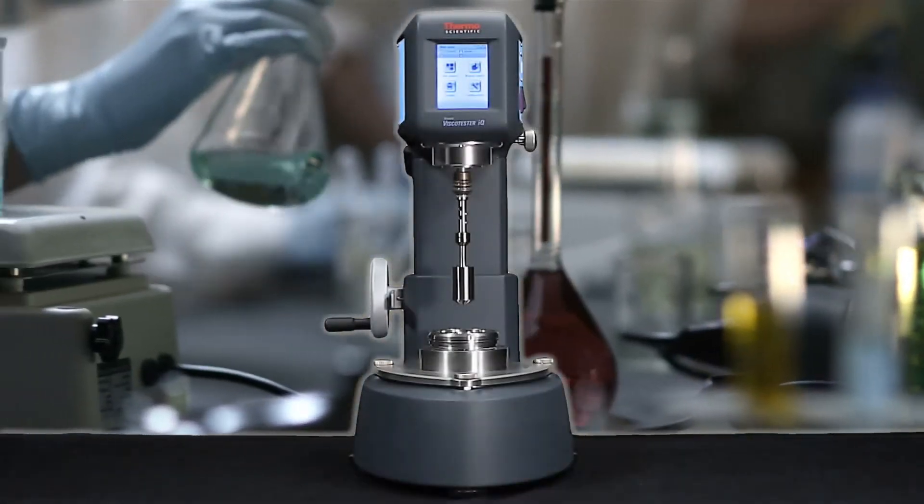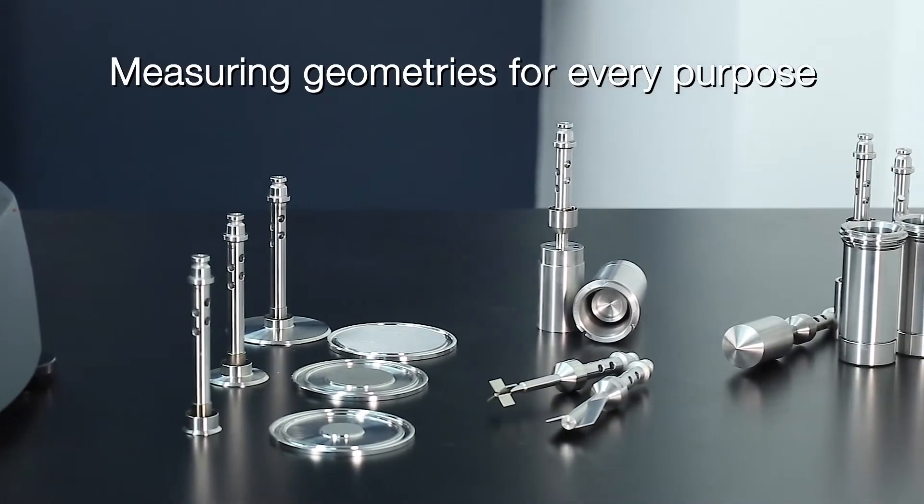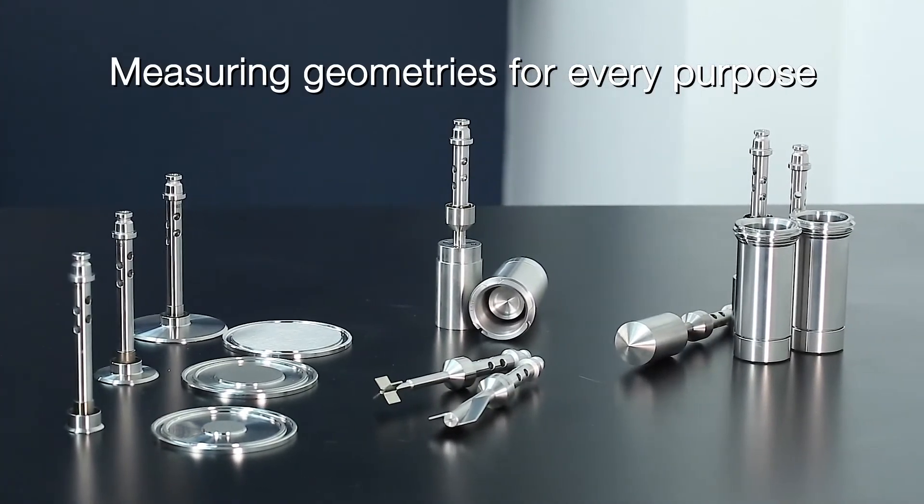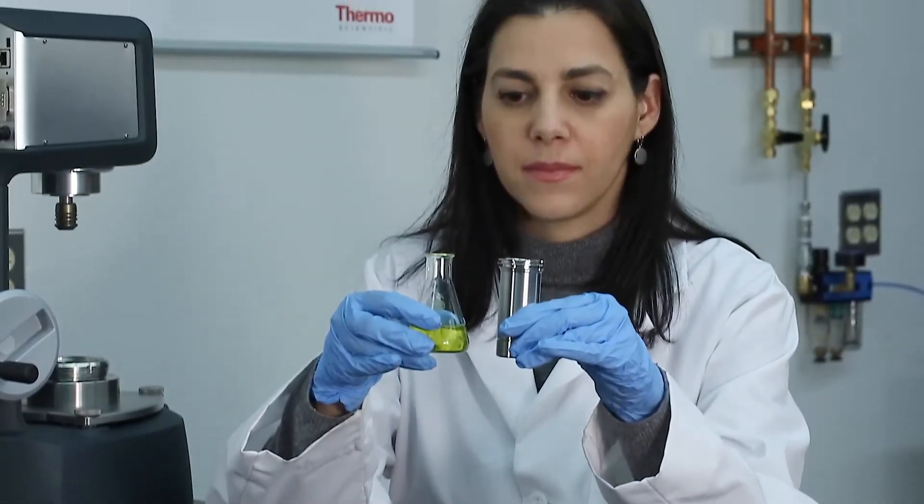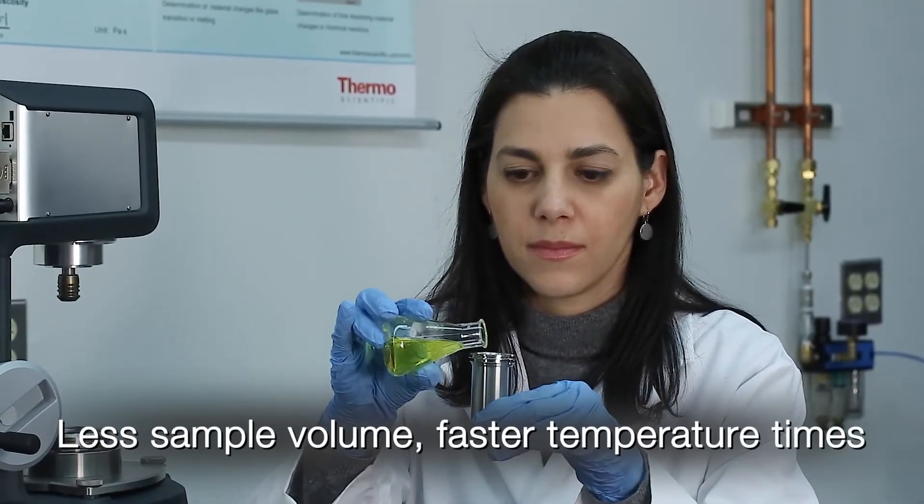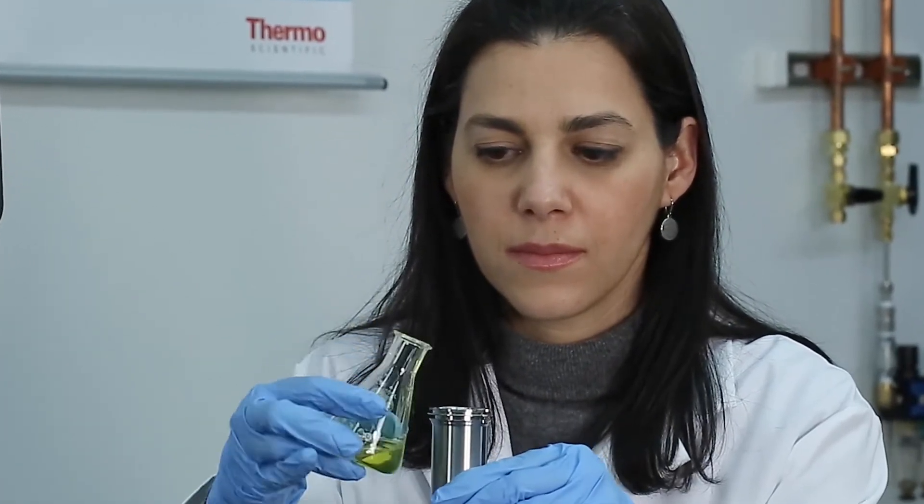The Haake ViscotesterIQ rheometer comes with a full range of measuring geometries, each designed for optimal handling and easy exchange. Thanks to small-sized coaxial cylinders, you use less sample volume and have shorter temperature equilibrium times, minimizing your cost per measurement.